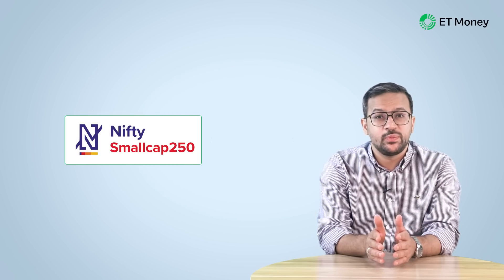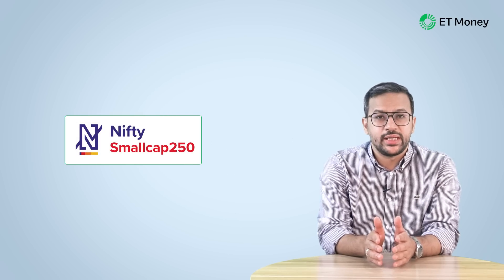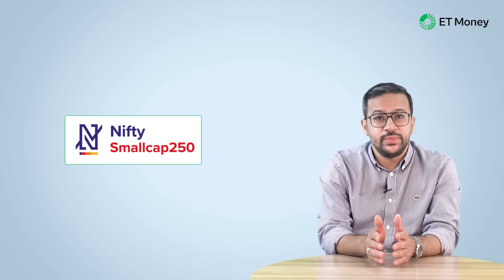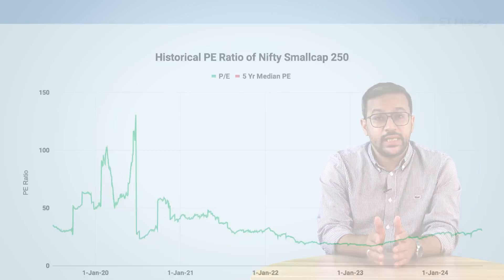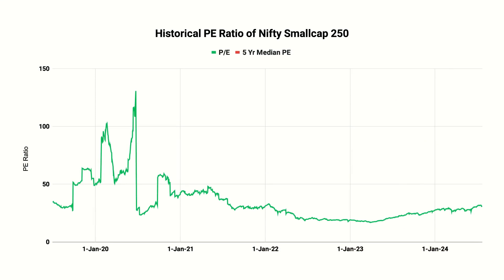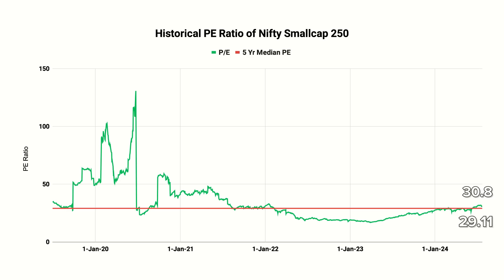Now let's look at the data for the Nifty Small Cap 250 index. Like the mid cap index, this index is relatively new, so we use the 5-year median PE for our analysis. Currently, the index is trading at a PE of 30.8. In absolute terms, a PE ratio of 30.8 doesn't look very high for small cap companies. The 5-year median PE of the index stands at 29.11. So the median PE and current valuation difference is not very high.